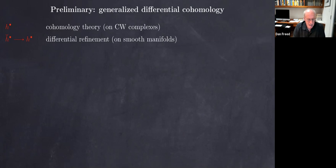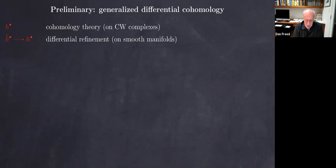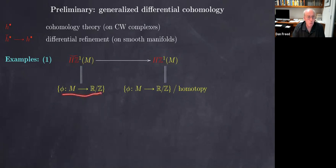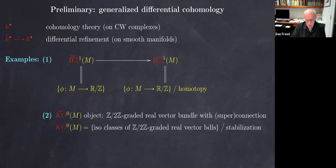A cohomology theory is something defined on a nice category of topological spaces, for example CW complexes or a larger category. There's a notion of a differential refinement, which is not a cohomology theory at all in the traditional sense — it's defined on smooth manifolds. In ordinary Eilenberg-MacLane cohomology in degree one, a class is a map to the circle R mod Z up to homotopy, and the differential refinement gives us an actual map — just the abelian group of such maps.